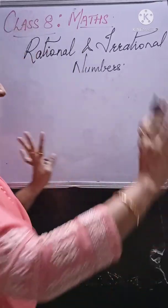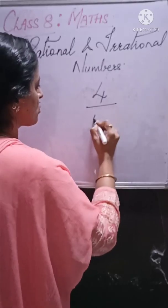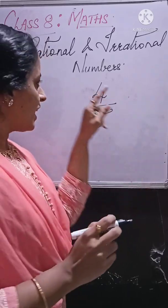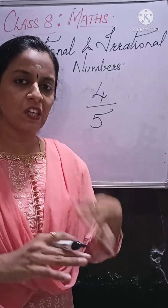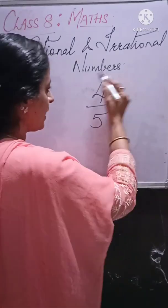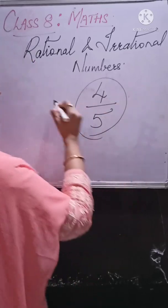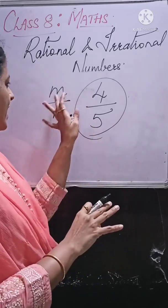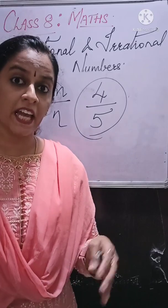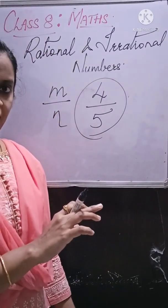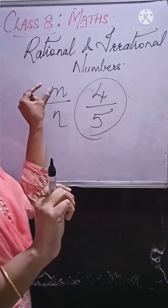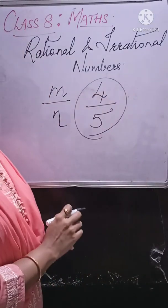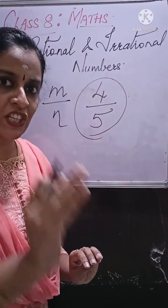I will straight away start with an example. If I give you a number of this form — 4 upon 5 — this is in fraction form, also called ratio form. I will denote it as M upon N. If you have any number in the form M upon N, such numbers are called Rational Numbers.